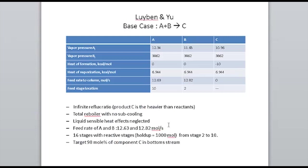They neglected liquid sensible heat effects, which I prefer not to do since it eliminates all enthalpy equations. What I found in the Loeben and Yen examples — even when I used their exact data — was at least two and normally three solutions where they had only presented one, underlining the fact that multiplicity is very common in these systems. Of course your algebraic equation solver needs to be reasonably good to find them.